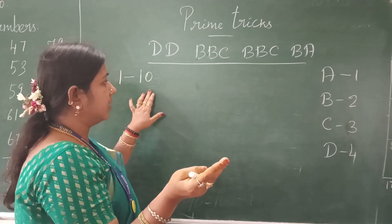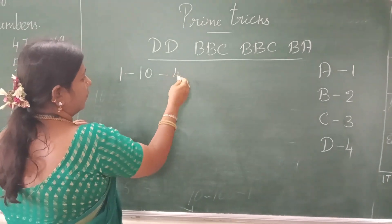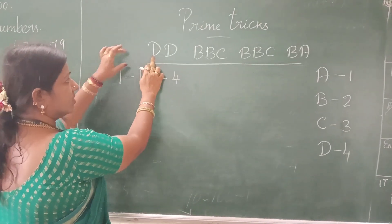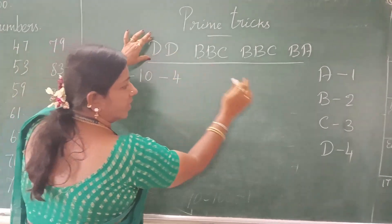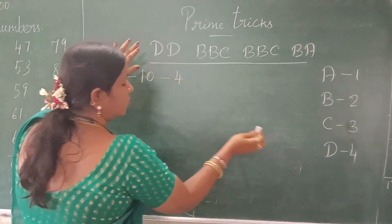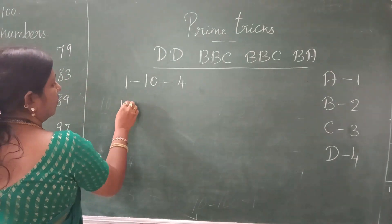Totally, 4 prime numbers are there in 1 to 10. So I write here 4. Now this number — 4 — is represented by the letter D, isn't it? So that is the code letter here.